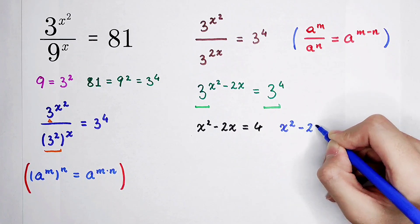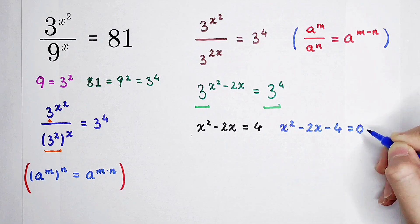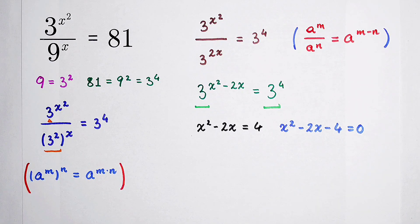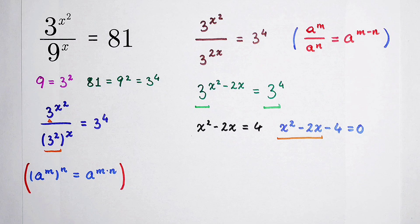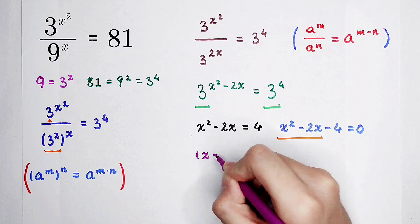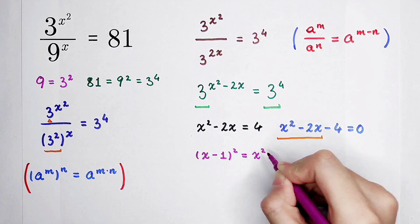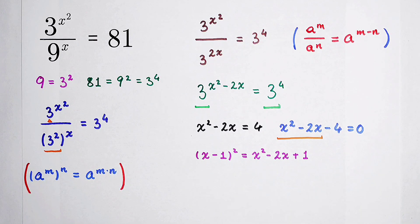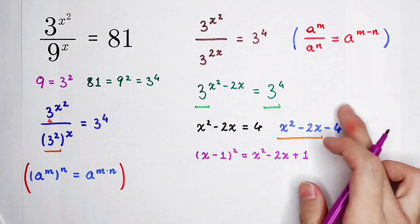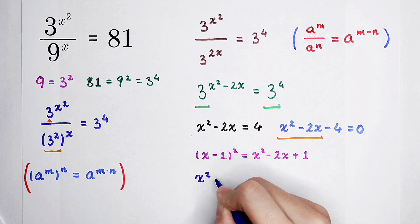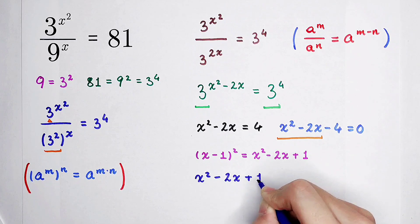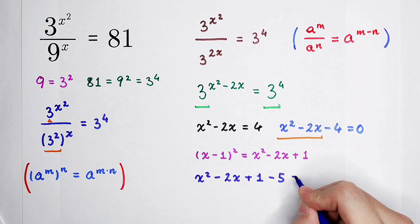So x squared minus 2x minus 4 equals 0. How do we solve this quadratic equation? By factorizing. Notice that x squared minus 2x is part of x minus 1 all squared, since x minus 1 all squared equals x squared minus 2x plus 1. We only lack a plus 1, and we have minus 4, so we write it as x squared minus 2x plus 1 minus 5 equals 0.